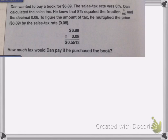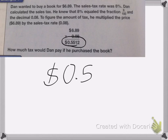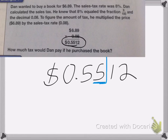He got the answer 0.5512. Now when we deal with money, our smallest money amount is the penny, and a penny is one-hundredth of a dollar. So the smallest we can get with money is in the hundredths place, because that's our penny. So that means we need to round our cents to the nearest penny.